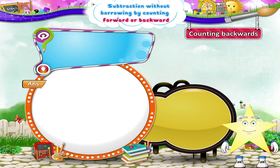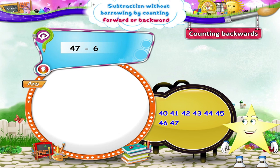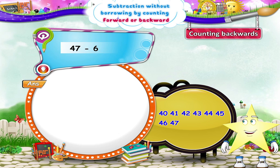Here's the last example: 47 minus 6. Let's solve it by backward counting. Starry, how many numbers should we count backwards? Yes. Six numbers backwards from 47. So: 46, 45, 44, 43, 42, 41. We reach the number 41. So, 47 minus 6 equals 41.